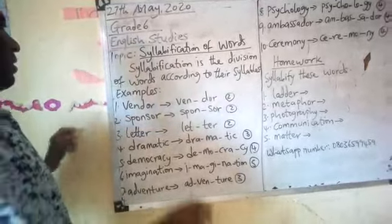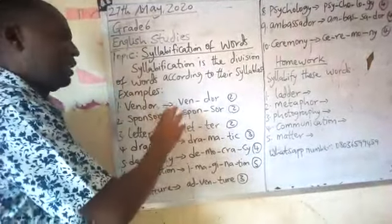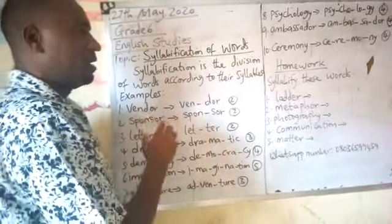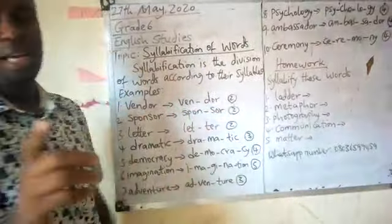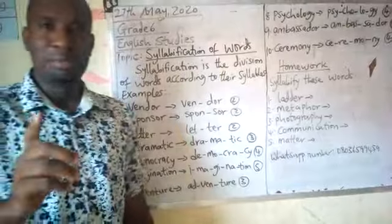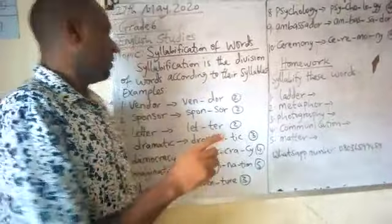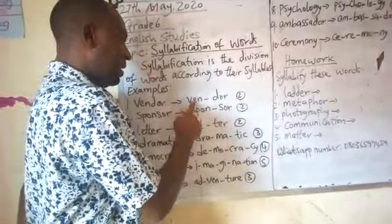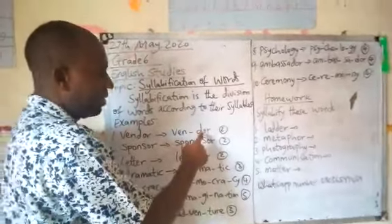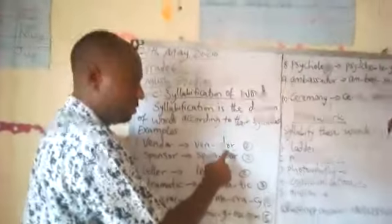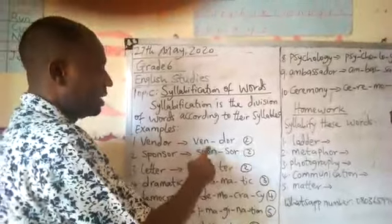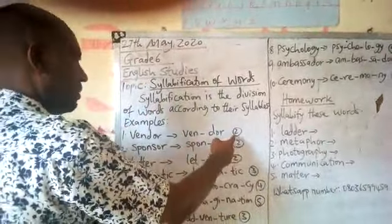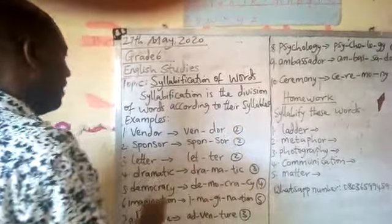Vendor. This is the way you pronounce it to identify the syllables in the word. Vendor. Now, in each syllable there must be a vowel. Vendor — there is a vowel here: E, and there is a vowel here: O. This word, when syllabified, has two syllables.